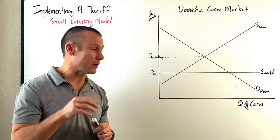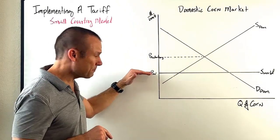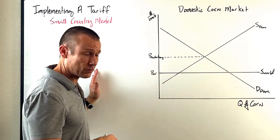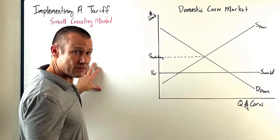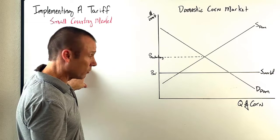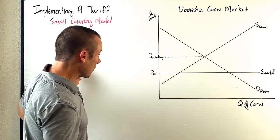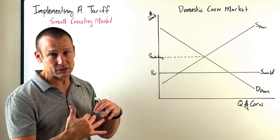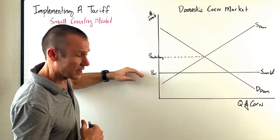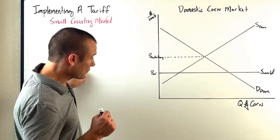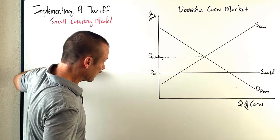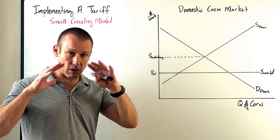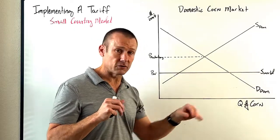Price world is determined in the world market. If I had more space I would draw another graph to the left, showing supply world and demand world intersecting at price world. We pull that intersection point over — because this country is so small, the rest of the world can supply everything this country demands at the world price. That intersection of supply world and demand world gives us the price world, which also acts as the supply world curve for this small country.